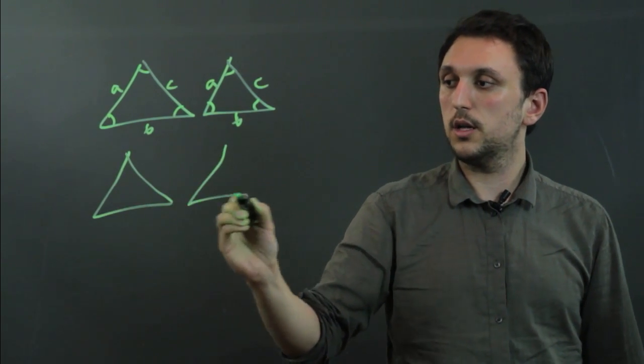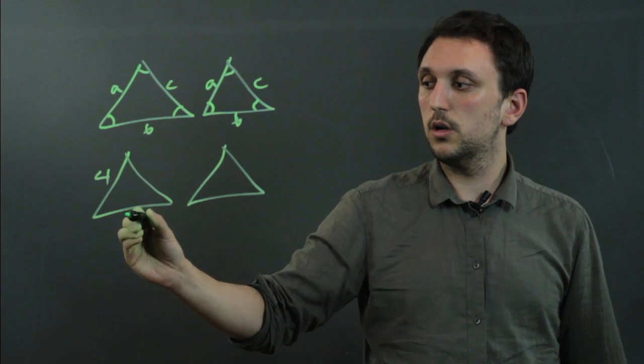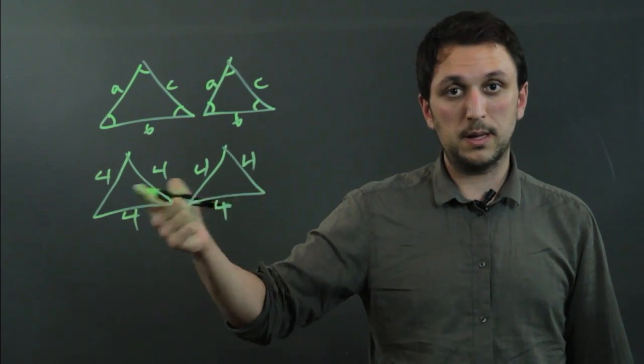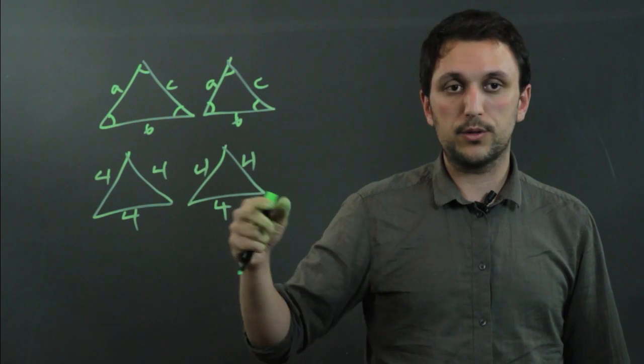If we have a triangle here that's 4, 4, and 4, this would have to be 4, 4, and 4, which would make both of these equilateral and both congruent.